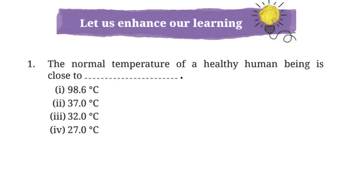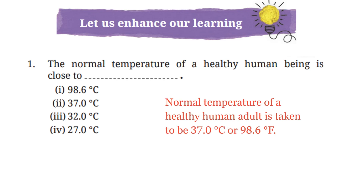Question 1: The normal temperature of a healthy human being is close to — options are 98.6°C, 37°C, 32°C, or 27°C. We know that the normal temperature of a healthy human being is taken to be 37°C or 98.6°F. So the correct answer is option 2: 37°C.